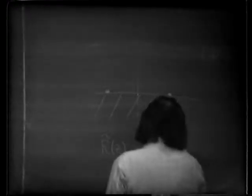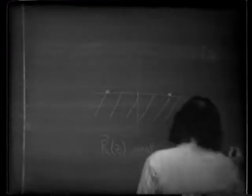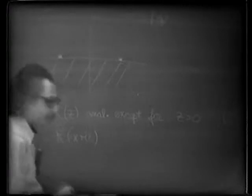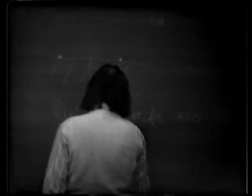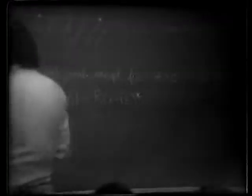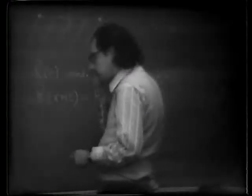The second condition becomes: R-twiddle of z is analytic except for the positive z-axis. The first condition becomes: R-twiddle of x plus i epsilon equals R-twiddle of x minus i epsilon, star — the so-called Schwarz reflection principle. This condition can, of course, be extended by analytic continuation throughout the entire complex plane. It tells me that R-twiddle of z equals R-twiddle of z-star, star — the complex conjugate of the function of the complex conjugate variable is analytic.